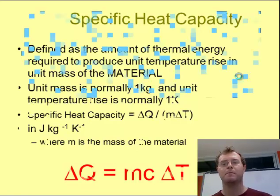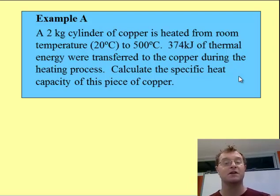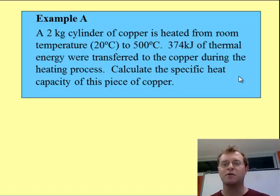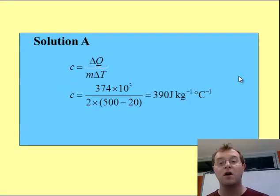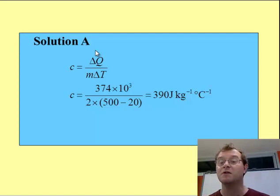Here's an example problem. A 2 kilogram cylinder of copper — the same example as before, so the 2 kilograms is now important. It's heated from room temperature to 500 degrees centigrade, meaning there's a 480 degree change in temperature — this could be in centigrade or kelvin. Again, 374 kilojoules of thermal energy was transferred during this process. Putting in what I know — the change in energy, the mass, and the change in temperature — this gives me 390 joules per kilogram per degree centigrade. That per centigrade could be per kelvin, because they're of equal size.